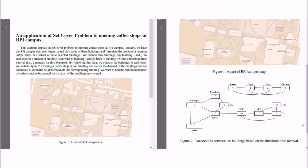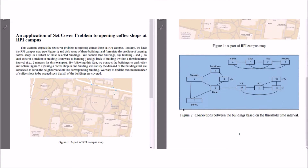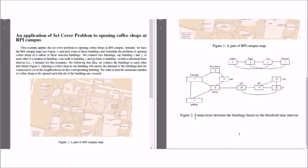For the coffee shop problem, we have the RPI campus map here — a part of it is shown in figure one. We picked some of these buildings as potential locations for the coffee shop problem, shown in figure two. To formally define, we have some connections between the buildings. We connect two buildings i and j if a student in building i can walk to building j and come back within a threshold time interval. In this example, we set the threshold to two minutes. We want to find the minimum number of coffee shops to open such that all students can get their coffee without being late for their classes.